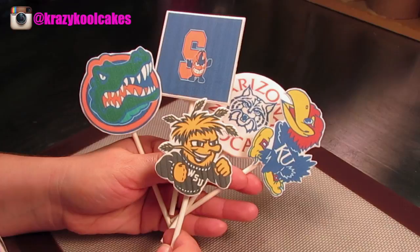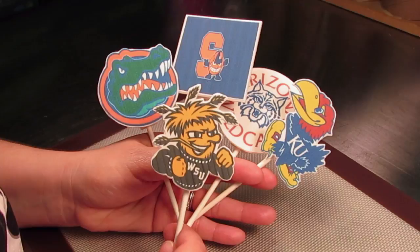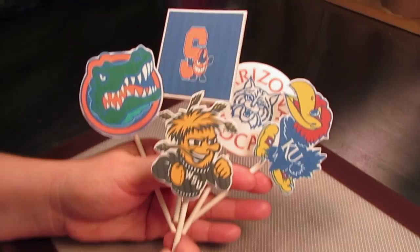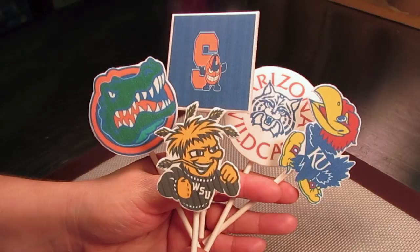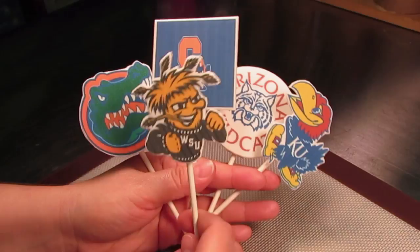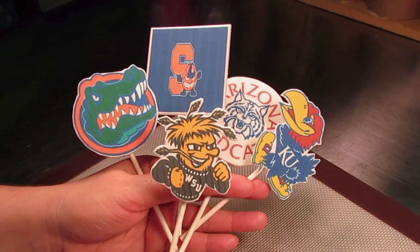We have here what we have been told by the Associated Press are the top five teams in America right now collegiately. We are creating cupcake toppers of the mascots and logos for these universities and we're going to show you just how easy it is to turn any edible image into an awesome looking cupcake topper just like these. So we hope you guys enjoy the tutorial and let's go ahead and get started.